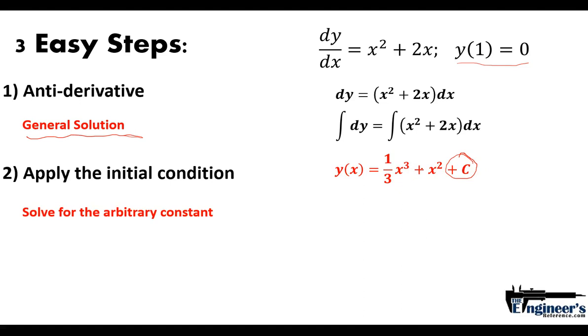You use it to solve for your arbitrary constant. We have y = 0 and x = 1, so that tells us 1/3 + 1 + C = 0. Subtract 1/3 + 1 from both sides, and you find that C = -1.33. So we solved for our arbitrary constant.